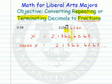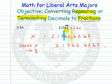The second step is to move that decimal point to the left of the first repeating block. That's two spots, which means we multiply by 100. So now we have 100x equal to 213.6262 and so forth.